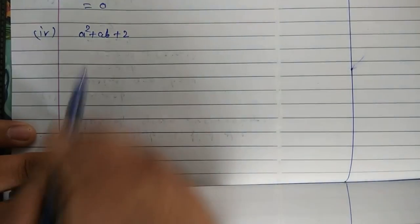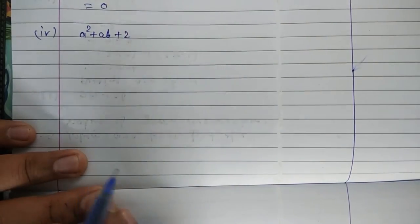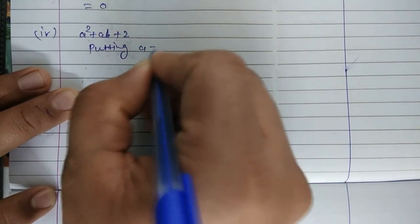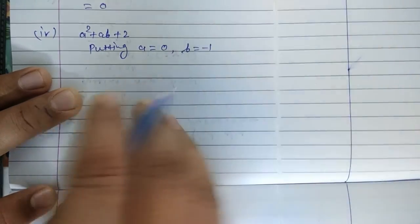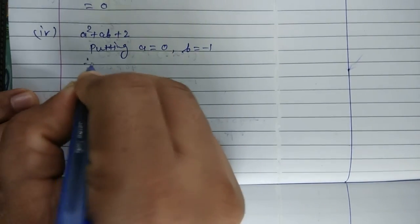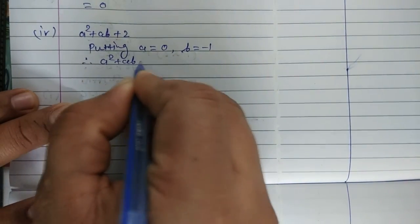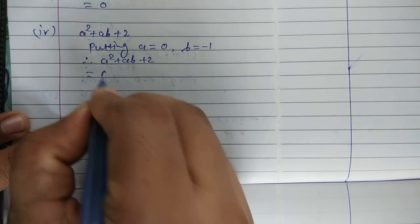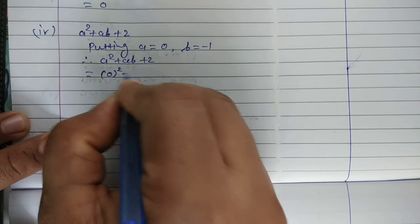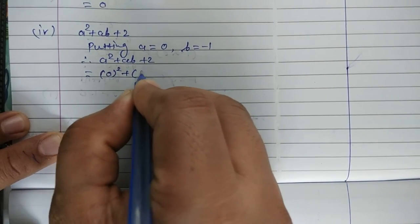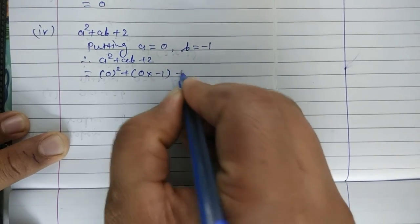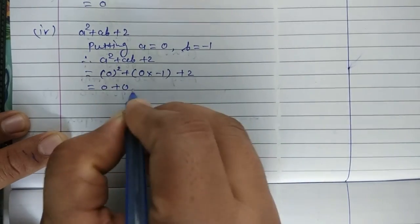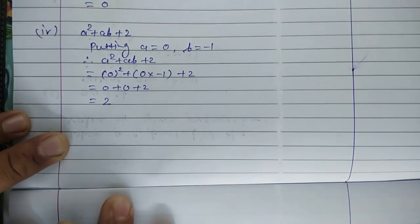Last expression: A square plus AB plus 2. Putting A is equal to 0, B is equal to minus 1. Therefore expression A square plus AB plus 2 is equal to 0 square plus 0 multiplied by minus 1 plus 2. 0 square is 0, 0 multiplied by minus 1 is also 0, plus 2. So the answer is 2.